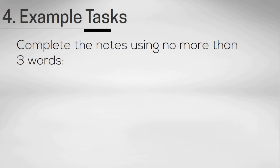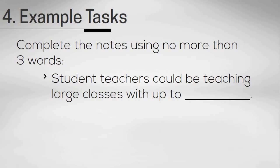The second example question is student teachers could be teaching large classes with up to... Again, here we've got a missing word or words, but we don't know exactly what the answer is. The phrase up to suggests the next part is going to be a number.